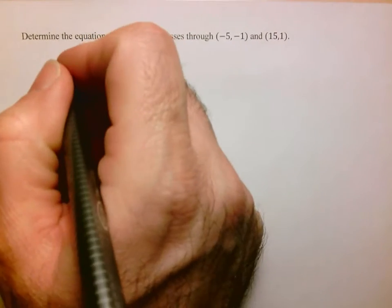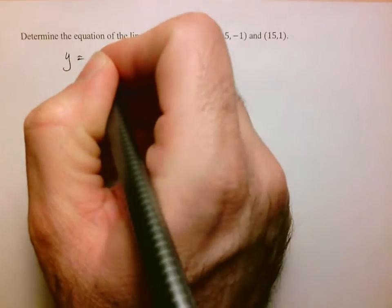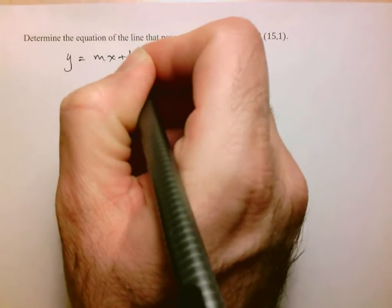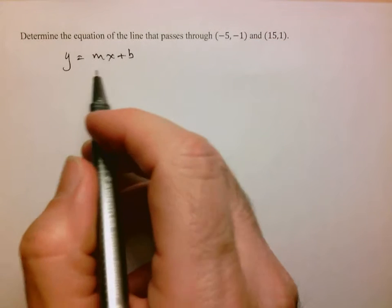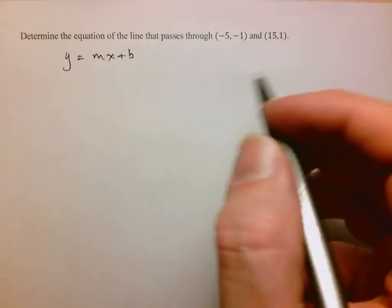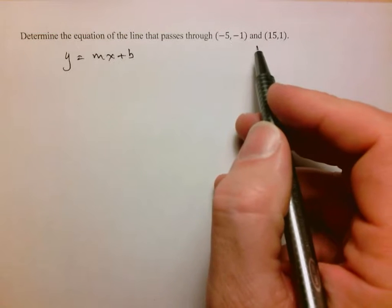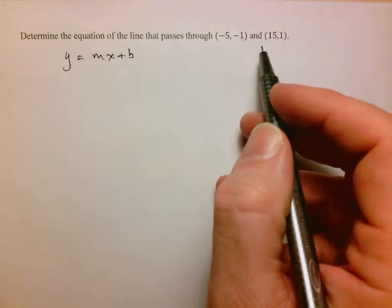So let's recall that the equation of the line looks like this: y equals mx plus b, where m is the slope and b is the y-intercept. Here neither of these are the y-intercepts since x is not equal to 0.